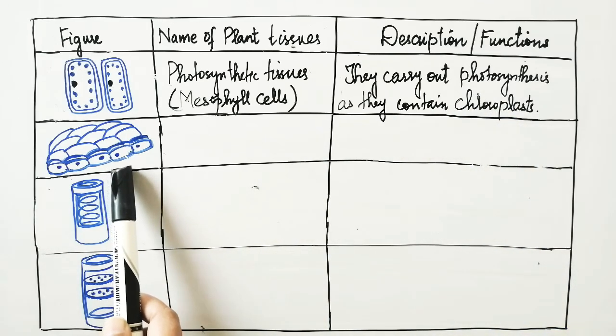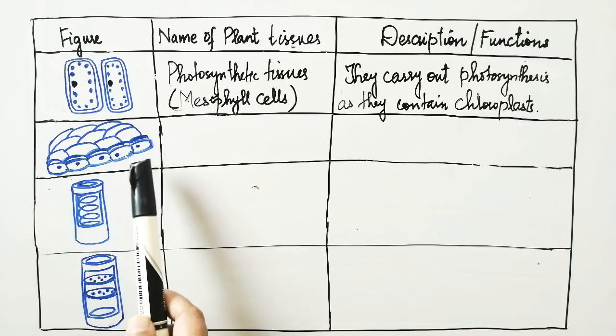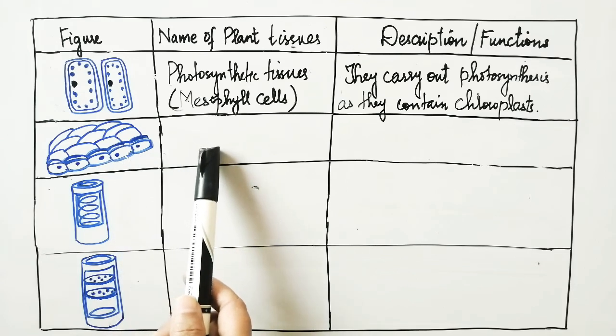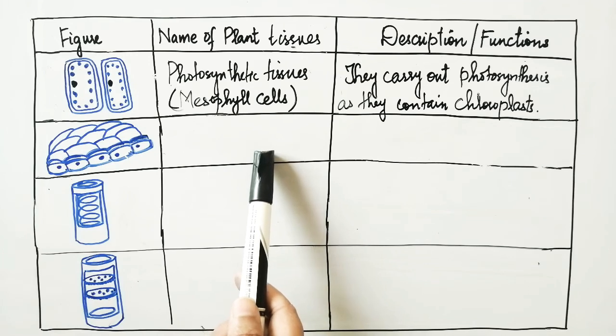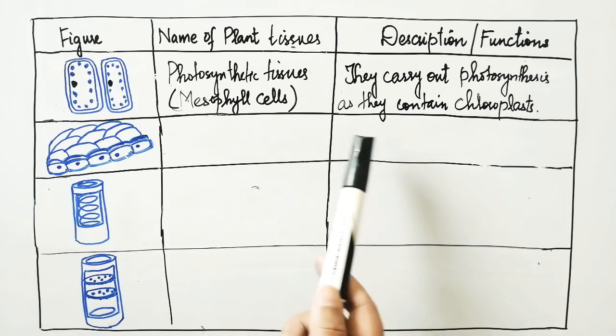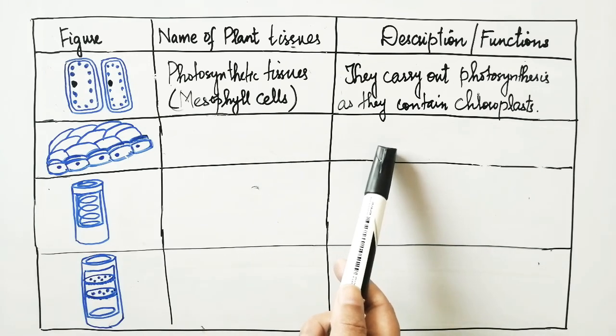Another tissue which you have to recognize is the protective tissue, or you can also write down the epidermal tissue, epidermis or epidermal tissues. And then you have to write down the function along with it.